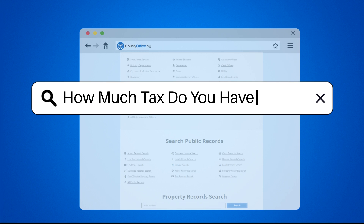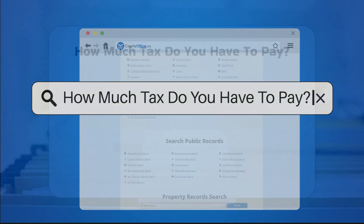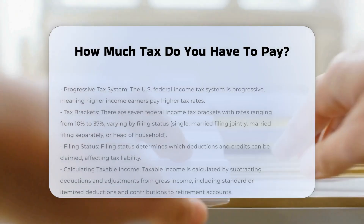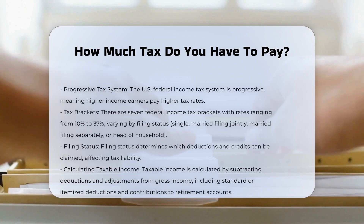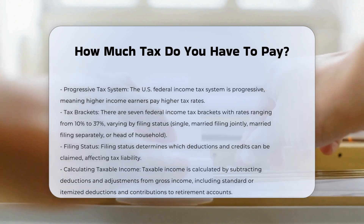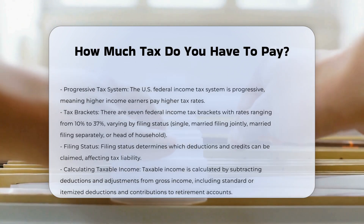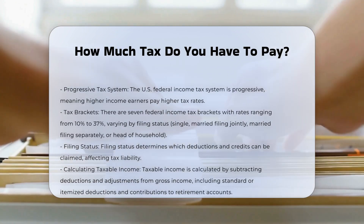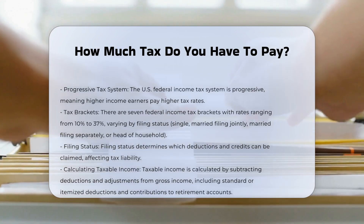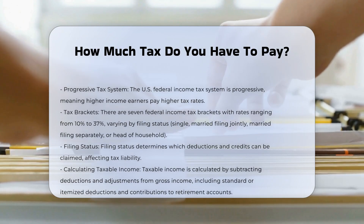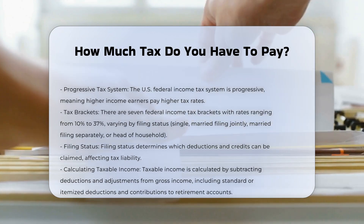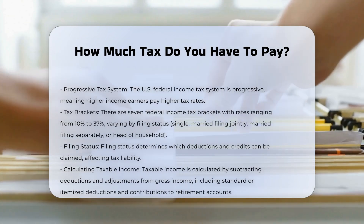How much tax do you have to pay? To determine how much tax you have to pay, you need to understand the federal income tax system, which is progressive. This means your income is divided into portions called brackets, each taxed at a specific rate.